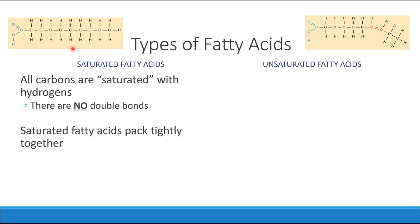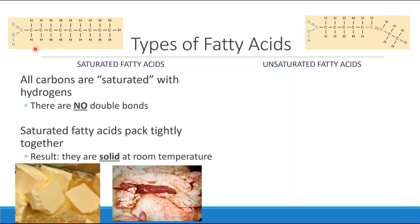Because we have no double bonds, these chains are straight, and they're able to stack right on top of each other. This is going to allow saturated fatty acids to be solid at room temperature. So whether we're talking about fat like butter made with saturated fatty acids, or fat like we'd find on meat at the supermarket, or even inside of you, saturated fatty acid chains are used to build the kind of fat that would be solid at room temperature.